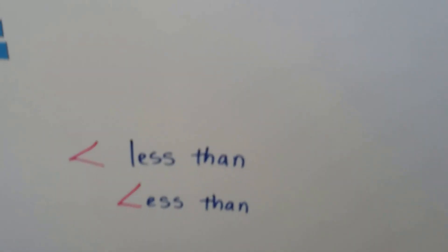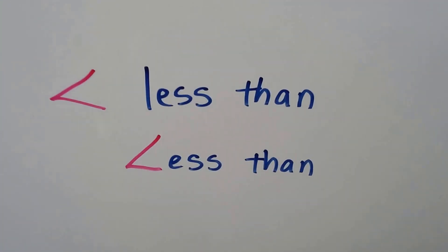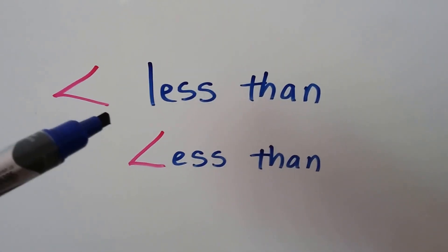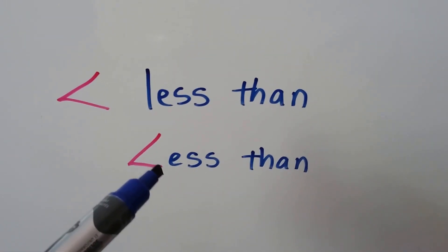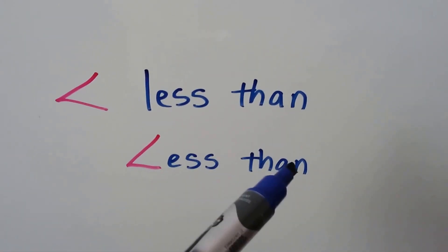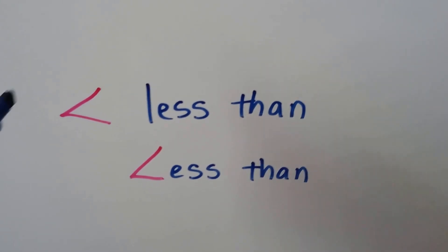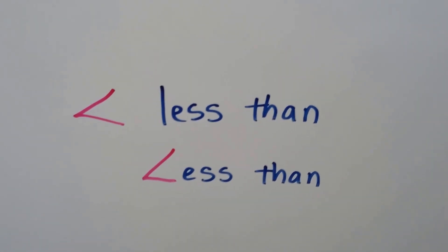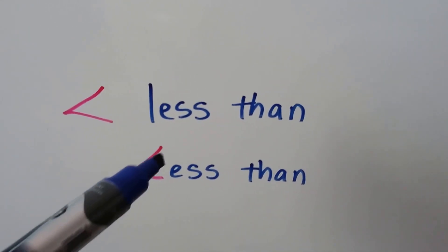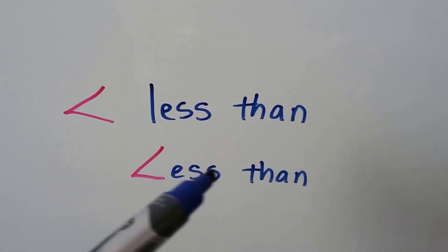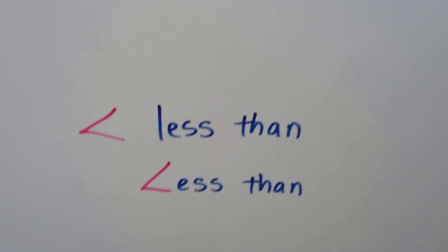We can tell which one is the less than symbol. This is the less than symbol — it almost looks like a slanted L for less than. If it was going the other way, it wouldn't look like an L. So you know that this is the less than symbol because it's the one that actually looks like it's spelling 'less.'